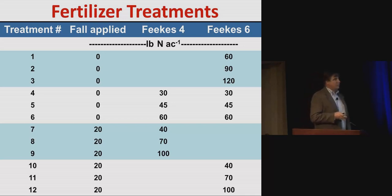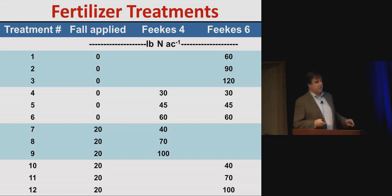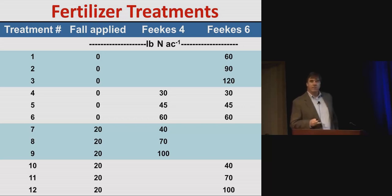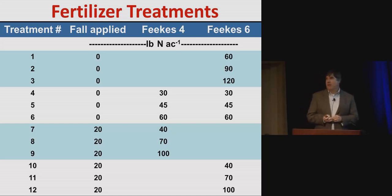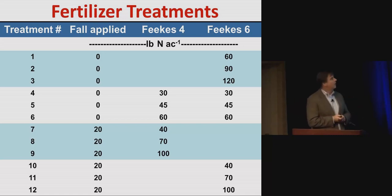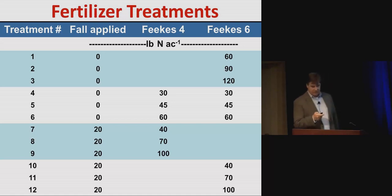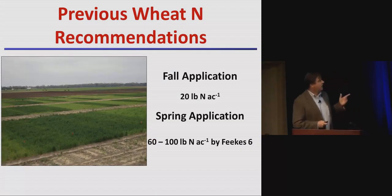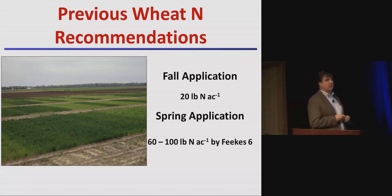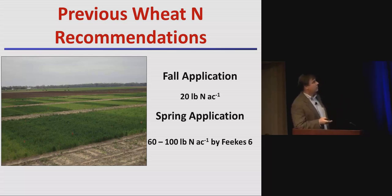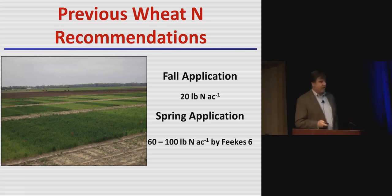Feeks 4 corresponds roughly to early February — certainly by the first or second week of February — and Feeks 6 is about a month later. At Tennessee Valley, timing runs a bit behind that. The previous recommendations from the production guide at the time were 20 pounds fall-applied and then 60 to 100 pounds by Feeks 6 for the entire state.